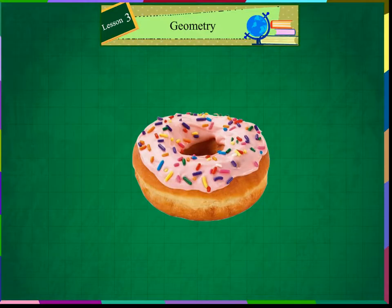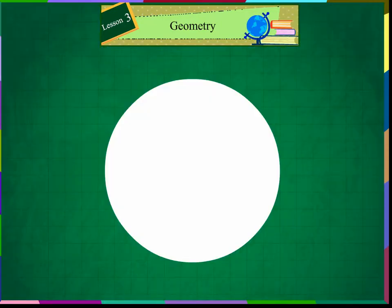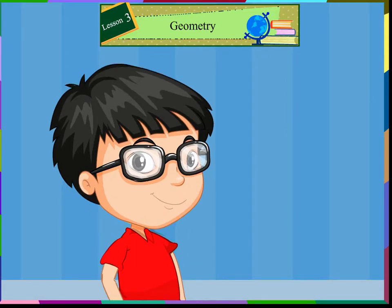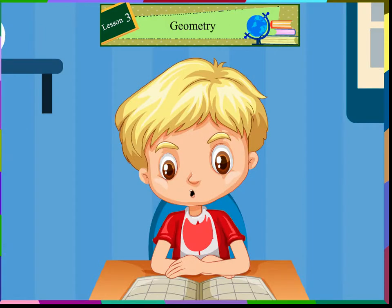Circle. Sonu, tell me the shape of this donut. It is a circle. I love donuts. A circle has one face. It has no corner and no side. Can you tell me some examples of a circle, Sonu? Yes, I can. A button, a clock, a pizza, a coin, and a ball are all in the shape of a circle. Circle comes in various sizes as shown on the screen.